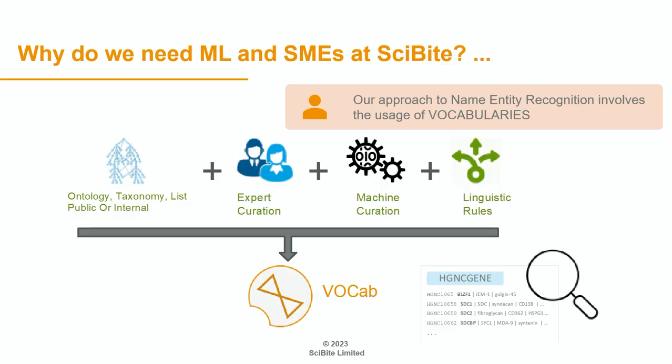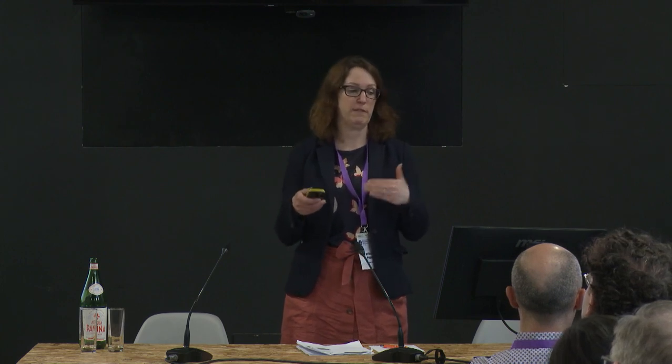Shifting slightly to move on to how we use machine learning at SciByte in particular. We have a named entity recognition tool at SciByte. How we use that is we create a set of vocabularies. We use publicly available sources — we're really lucky in the life sciences that there's a high-quality set of ontologies and taxonomies out there that we can use as our basis. Then we can apply our NER rules on top of that and add our curation, perhaps identifying where things need to be case-sensitive or set in context, or disambiguation and so on.